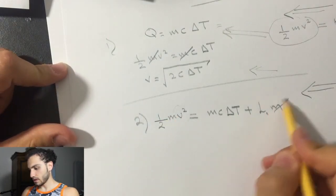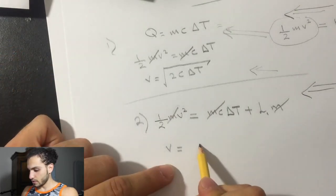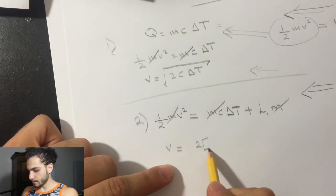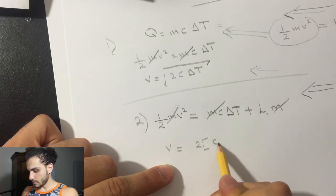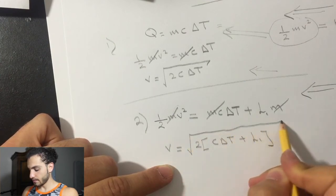Now we can cancel the masses again, so the velocity will be equal to the square root of 2C delta T plus the latent heat of the iron.